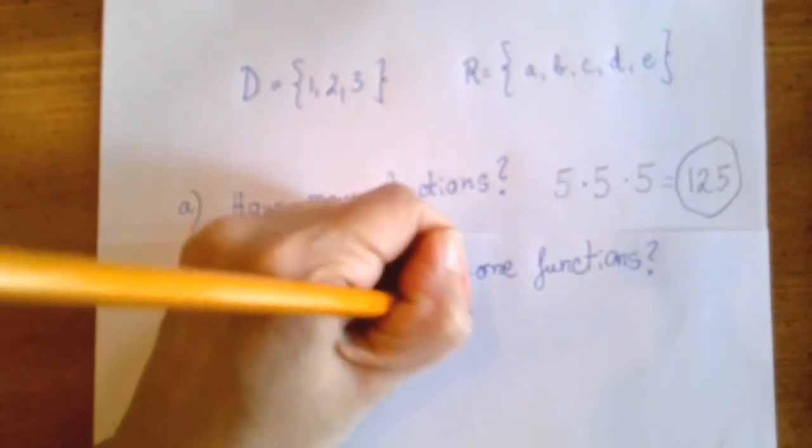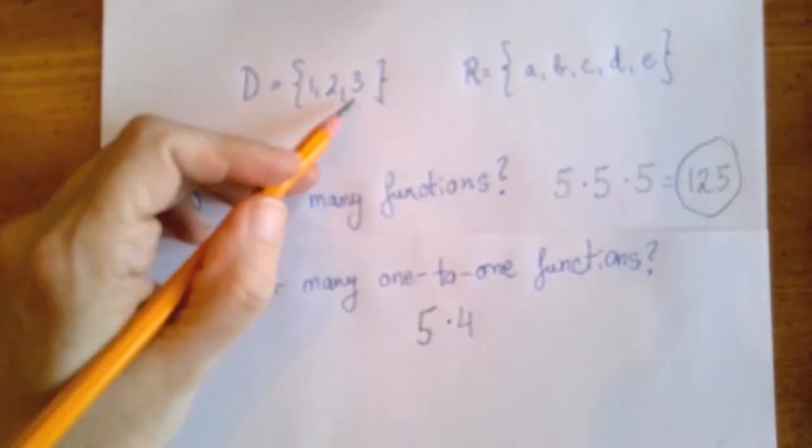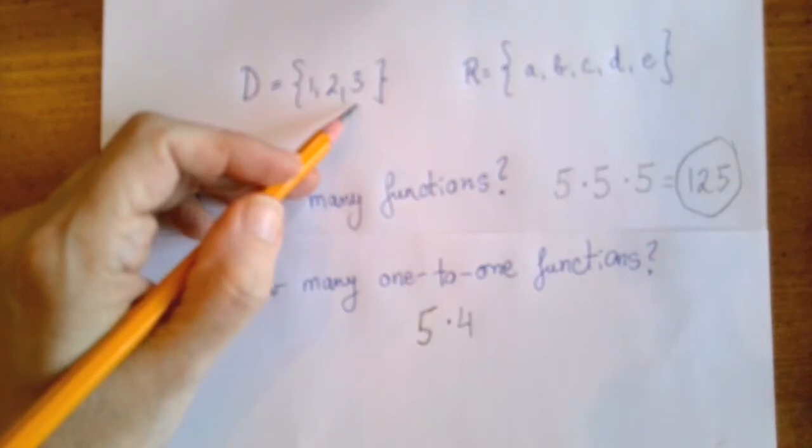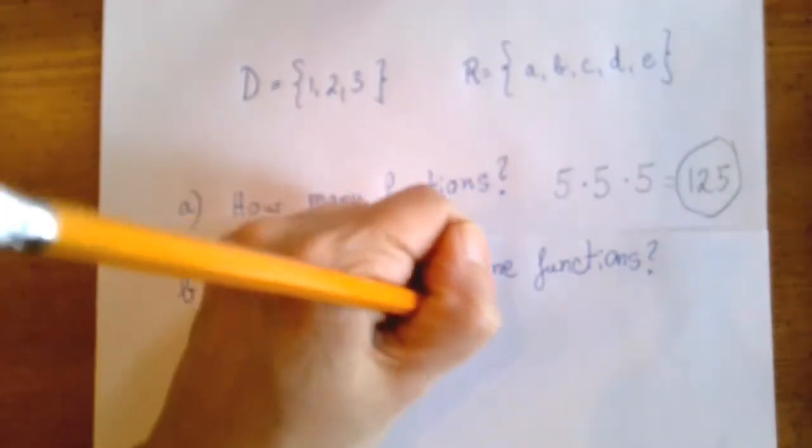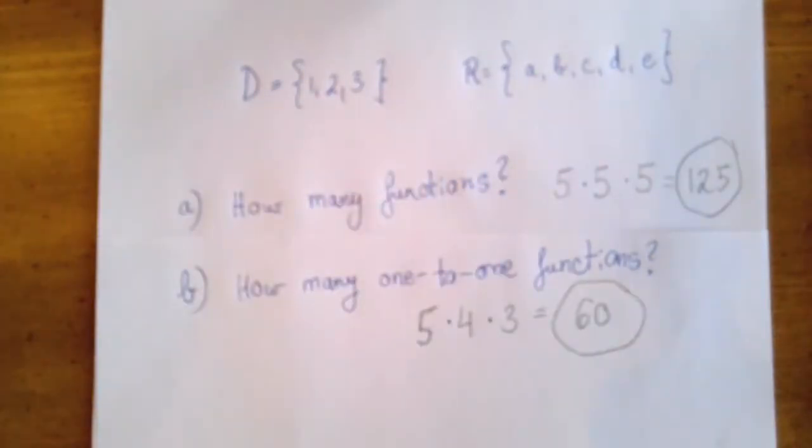So we're down to four choices. And then next, when we decide what to assign to three, we're down to three options. So 60 such functions are possible.